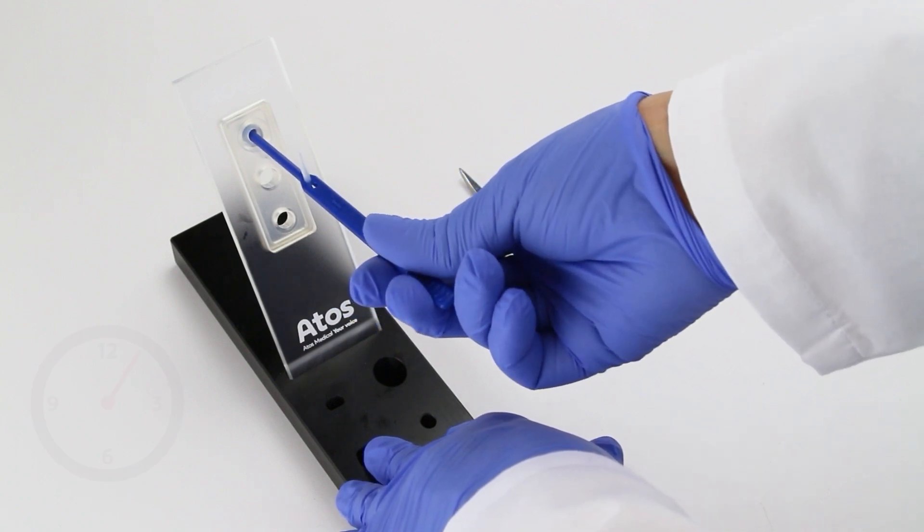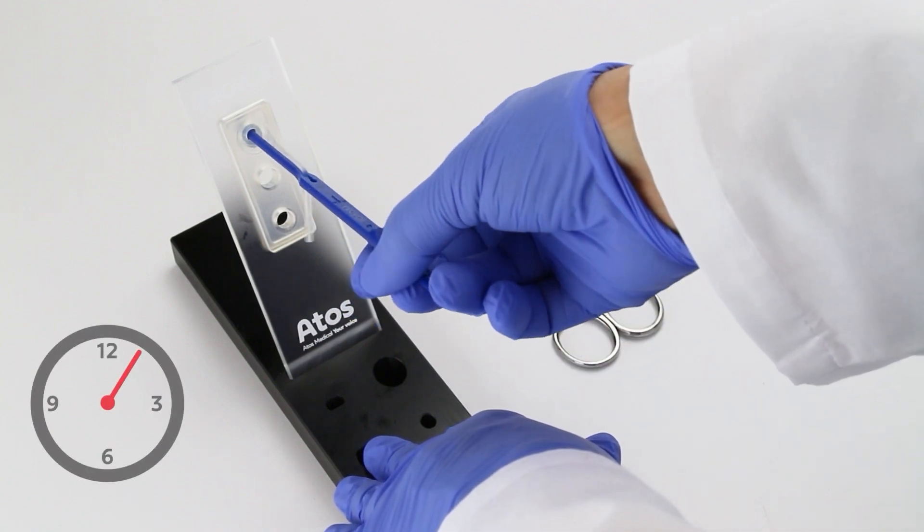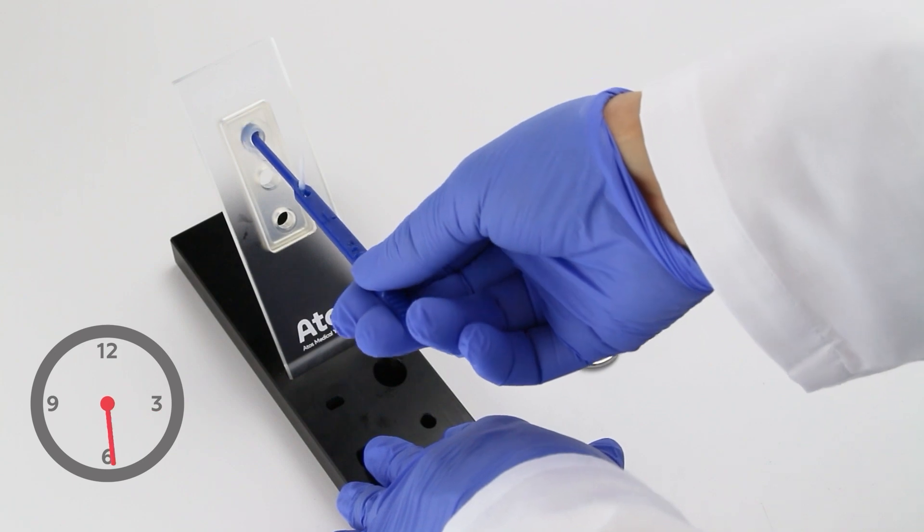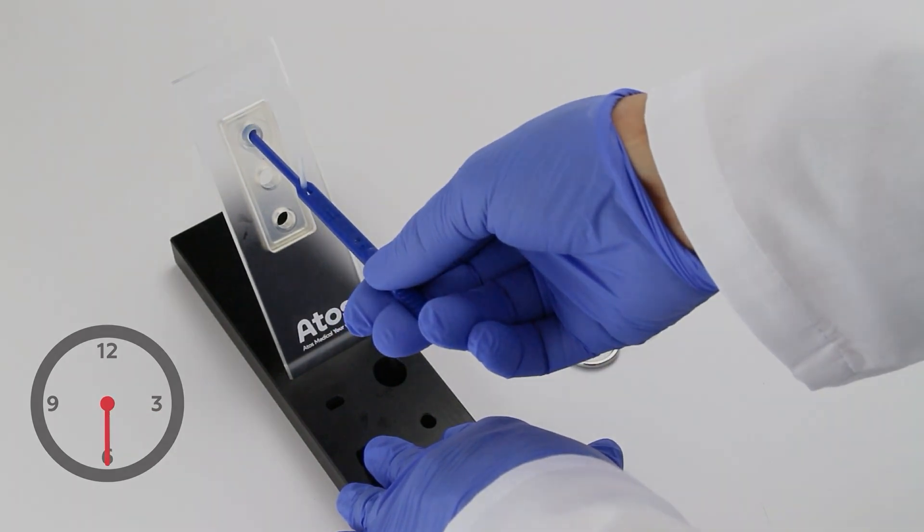Once placement is confirmed, but prior to cutting the safety strap, rotate the voice prosthesis so the safety strap is pointing downwards in the 6 o'clock position.